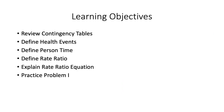The next is a list of learning objectives that will be covered in this mini lecture. The first one is a review of contingency tables, defining health events, as well as person time data and rate ratios, explaining the rate ratio equation, and a practice problem.